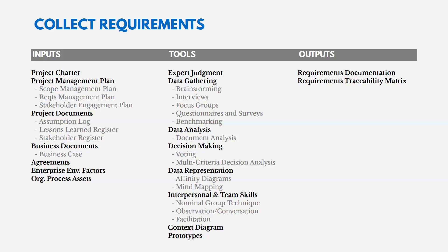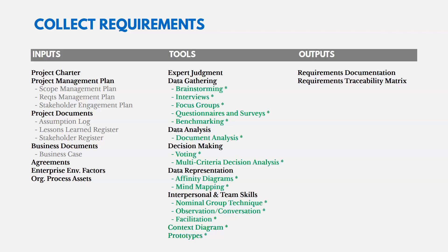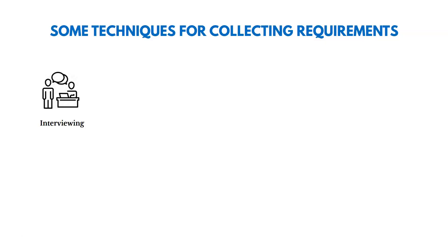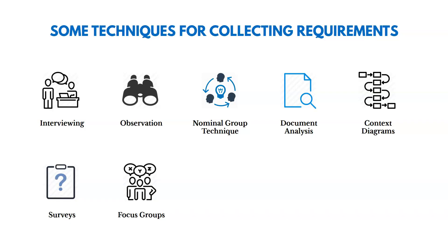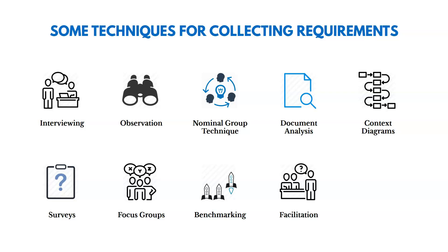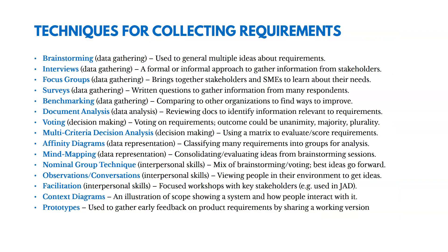The outputs of collect requirements are requirements documentation and the requirements traceability matrix. You also have many tools to help collect requirements from customers. These include interviewing, observation, the nominal group technique — a method for brainstorming with groups — document analysis, context diagrams, surveys, focus groups where you bring in subject matter experts for input, benchmarking to compare yourselves to other organizations, facilitation for organized discussions with stakeholders, and prototypes to gather requirements by sharing a working version of the product.